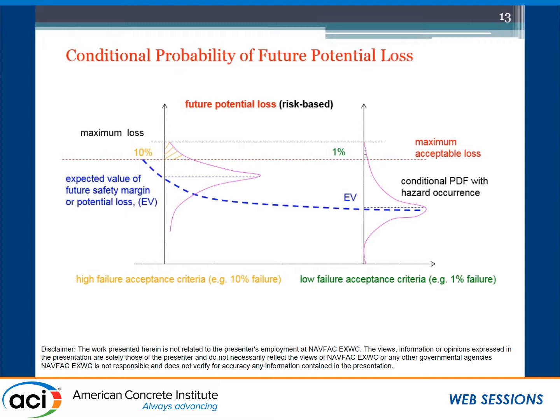When we raise the bar — set a higher standard — what does that actually mean? If we have a maximum loss and a maximum acceptable loss, using a lower standard means 10% over with 1% probability. If we use the expected value to do our design, in reality something could still happen — that's the probability of loss. Having a higher standard doesn't mean you have zero loss; it just changes the probability. This is important to clarify for people who think a high standard means no loss — that's not really true.